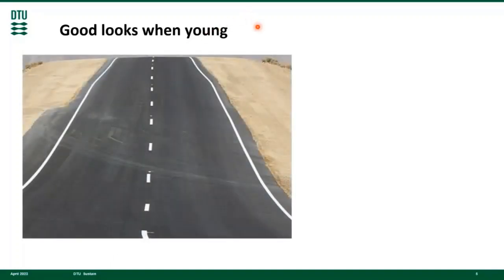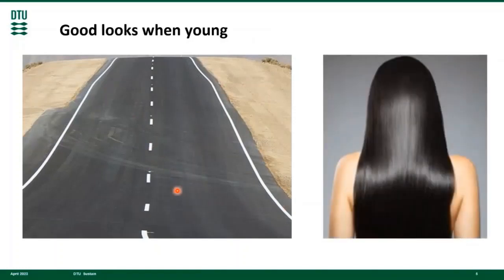Young asphalt pavements have glossy black surfaces. The lane markings are vibrant and sharp. Similarly, young humans have good looks with glossy hair, vibrant skin, and sharp features.